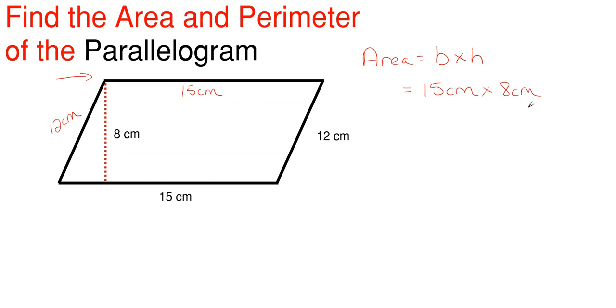So our area is going to be 15 times 8, which gives us 120 centimeters squared. Keep in mind, the squared symbol on the unit of centimeters is representing an area calculation, an area measurement. So that is our area.